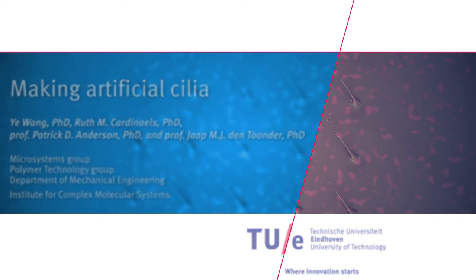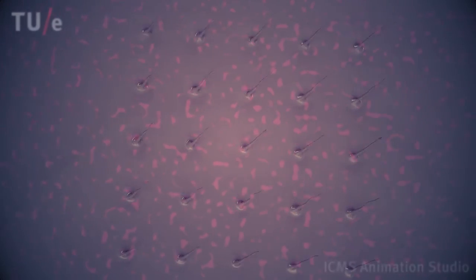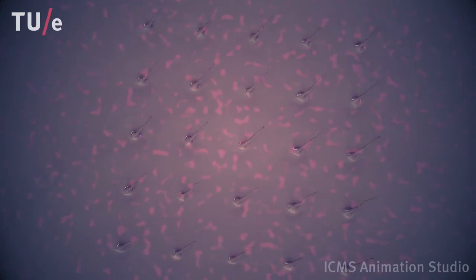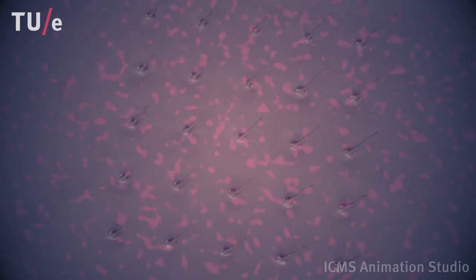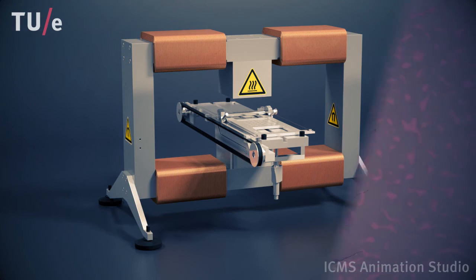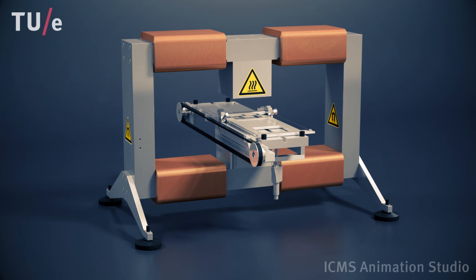Artificial cilia are bio-inspired micro-actuators that can be used to generate liquid flow in microfluidic devices. We have developed a special fabrication technique to make artificial cilia in a cost-effective manner.